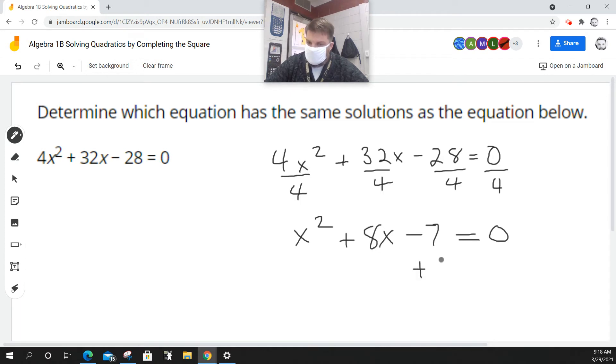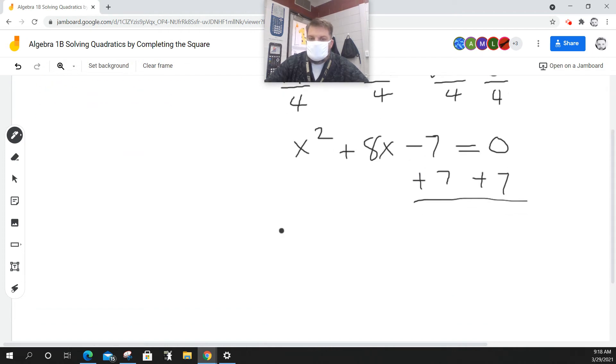So I'm going to add 7 to both sides, and we're going to complete the square. When I do that, I get x squared plus 8x. We're going to put something in here to complete the square. And then that all equals 7.